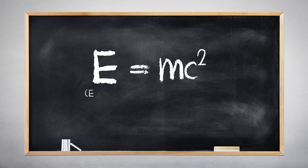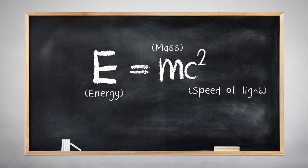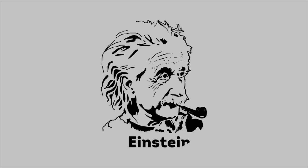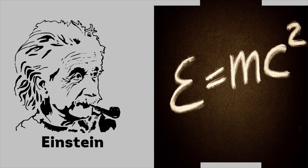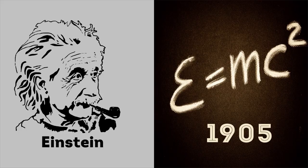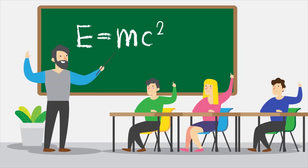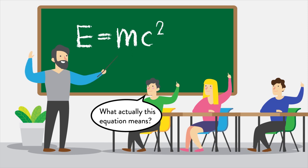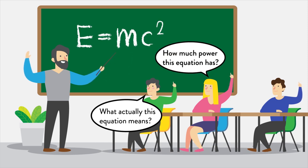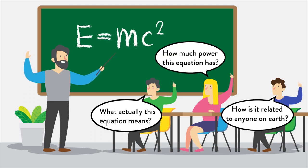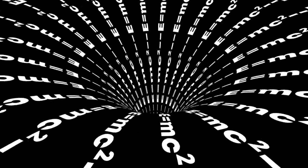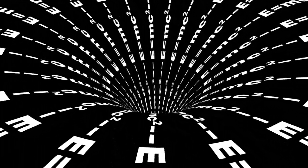E is equal to mc², which means energy is a product of mass and the square of the speed of light, and it is one of the world's most famous equations. Einstein introduced his revolutionary equation in 1905 and most of us were introduced to it in high school. But have you ever wondered what this equation actually means, how much power it has, and how it is related to anyone on Earth? Today we are going to answer all of these questions.